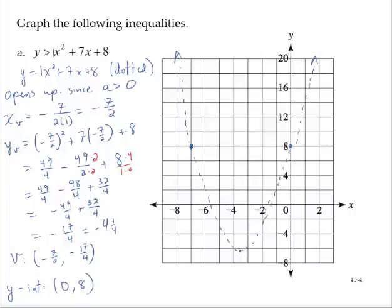Now, let's use a test point. I would often recommend to use the origin as a test point, because arithmetic with 0 is very easy. So I'm going to test 0, 0 into the original inequality. So the y-value is 0. Is that greater than 0 squared plus 7 times 0 plus 8? The right-hand side simplifies as 8. Is 0 greater than 8? That's false.